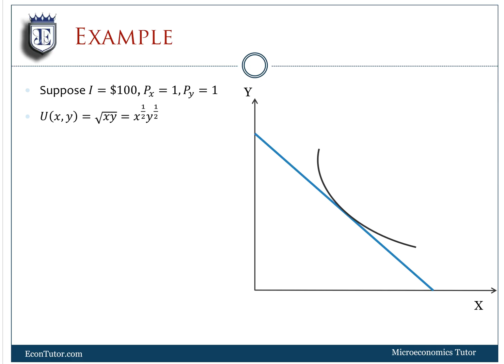MUx is simply the partial derivative of utility with respect to X. In this case, that's going to be half X to the negative half, Y to the one half. And MUy similarly is going to be half Y to the negative one half, X to the one half.